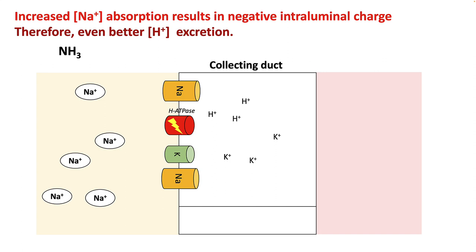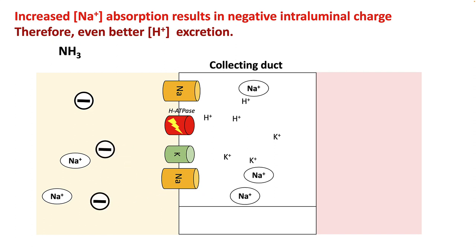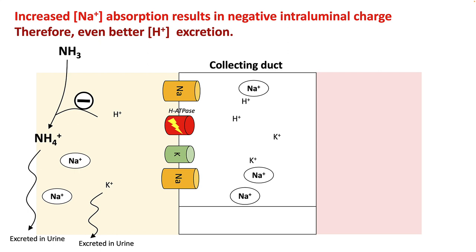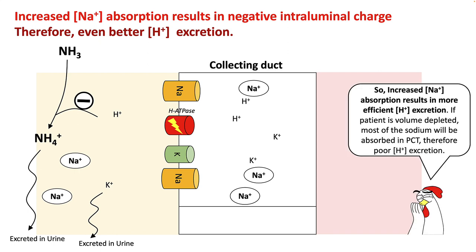Increased sodium absorption results in a negative intraluminal charge. Therefore, you have better hydrogen and potassium excretion. The negative intraluminal charge makes your hydrogen and potassium excretion much more efficient. Therefore, if your patient is volume depleted, most of the sodium will be absorbed in the proximal convoluted tubule, so less sodium will reach your collecting duct, and you will have relatively poorer hydrogen excretion.